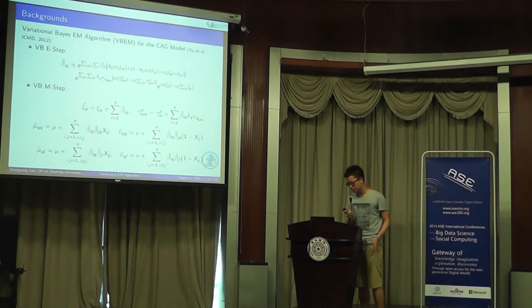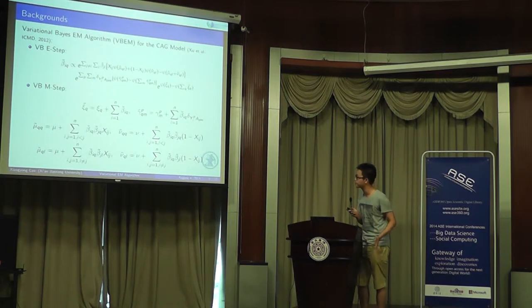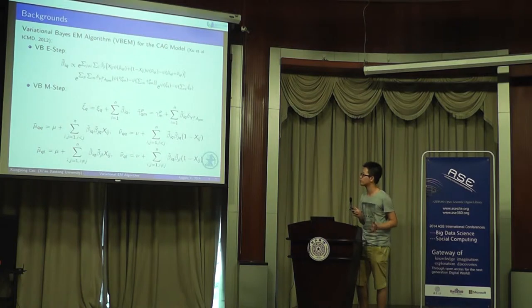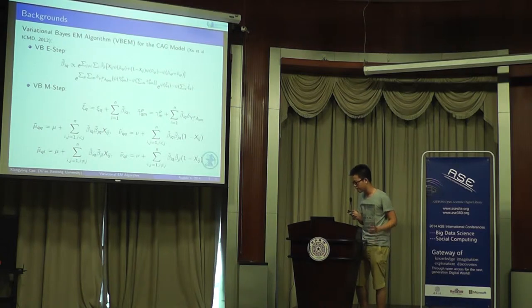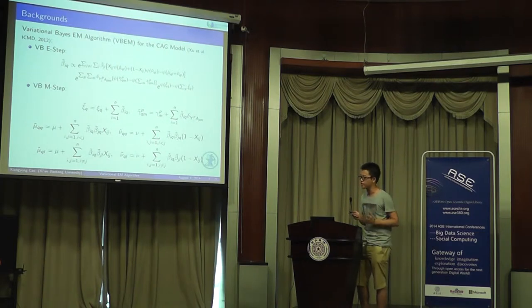After Xu proposed the model, he proposed the variational BSEM to handle this model. This algorithm consists of two steps. First is the variational E-step. In this step, they update the posterior of each vertex. Next is the M-step. In M-step, he updates the variational parameters. Then repeat the E-step and M-step until convergence.